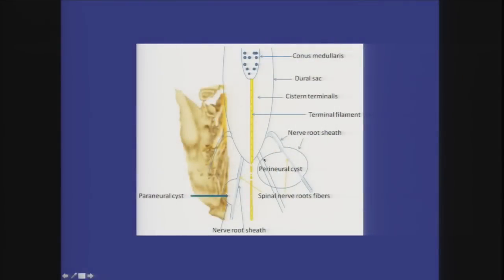There are two types of Tarlov cysts — the nerve root sheath with nerve fibers running inside the cyst or included inside the wall — making revision complicated. If a Tarlov cyst seems to be the etiology of pain, we'll typically try selective nerve root blocks of that spinal nerve or epidural steroid injections before moving on to referral for more invasive surgery.